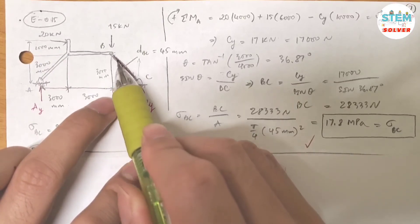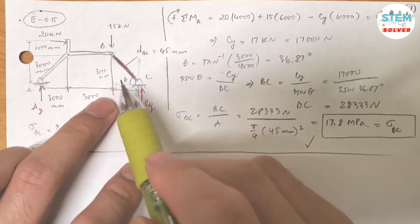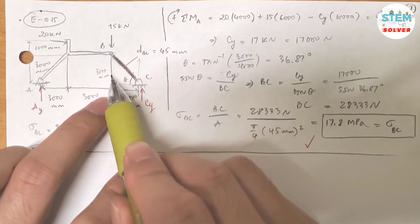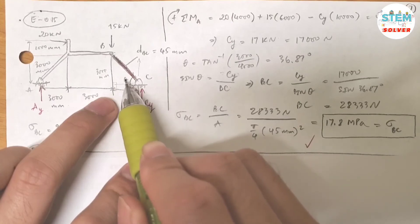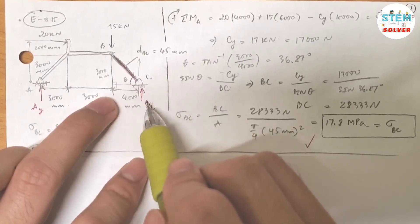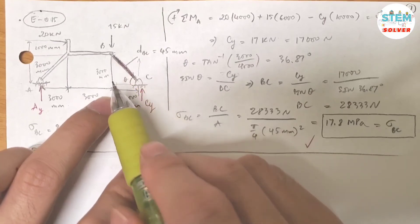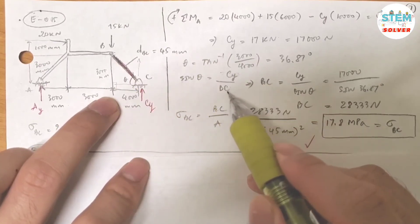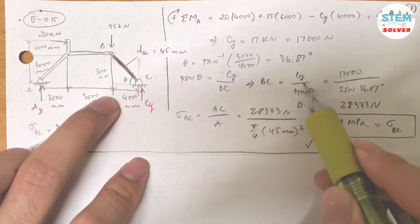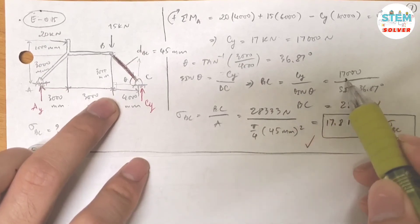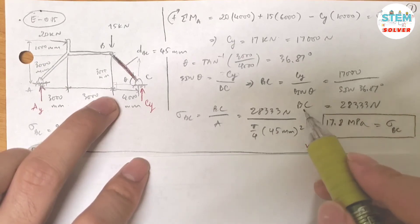So I can do it over here because it's up, so you can move it around as long as it's pointing up and forms a triangle. So for better representation, Cy you can bring it up here, it forms a triangle. So sine theta equals opposite over hypotenuse, and opposite is Cy, hypotenuse is BC. So I can solve for BC, which is Cy over sine theta, which is 17,000 over sine of 36.87 degrees.